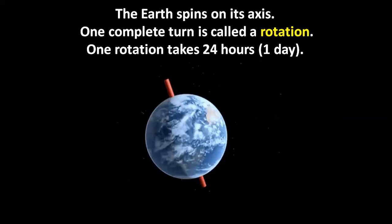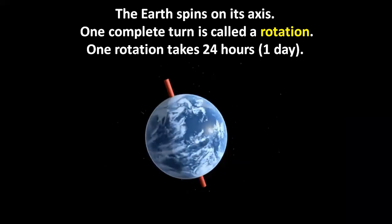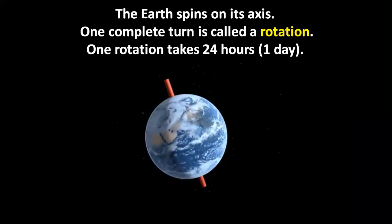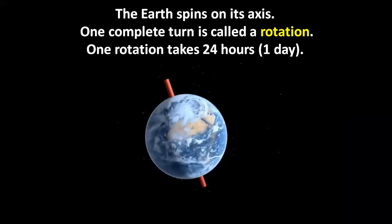The Earth spins on its axis. One complete turn is called a rotation. One rotation takes 24 hours. One day.